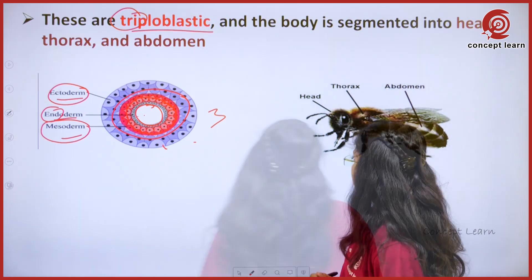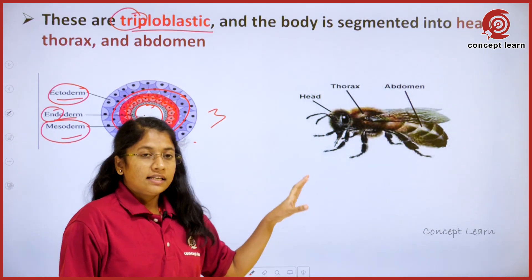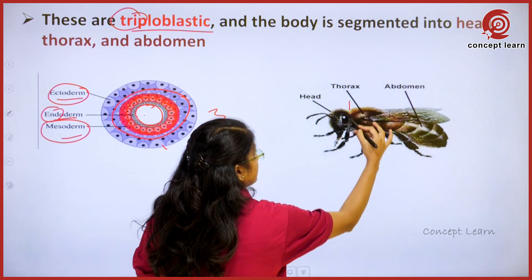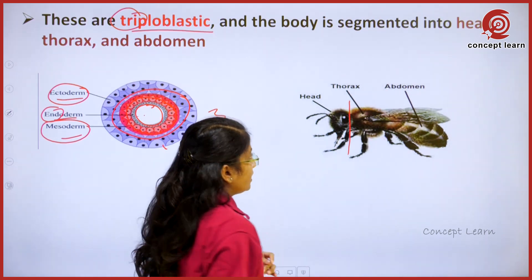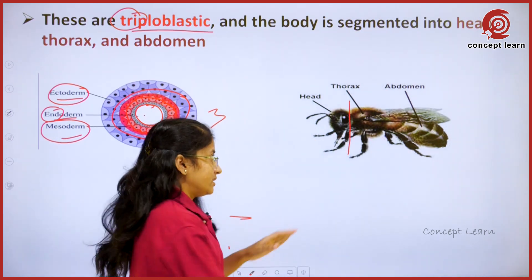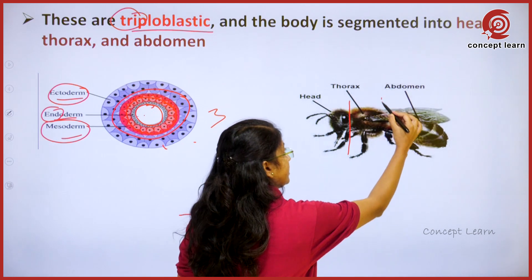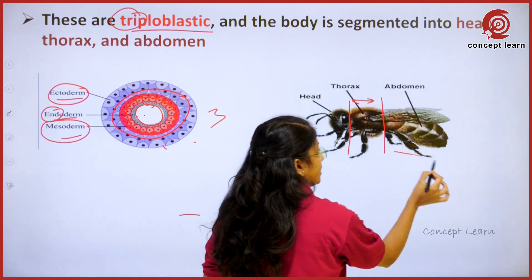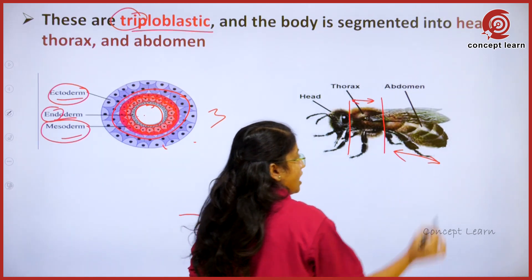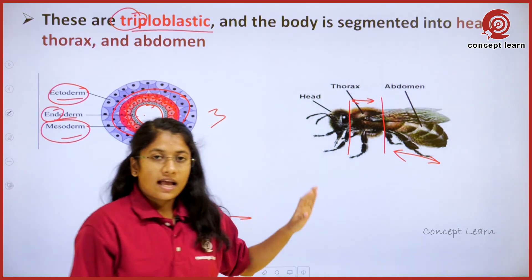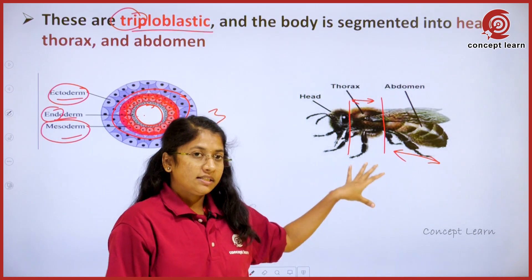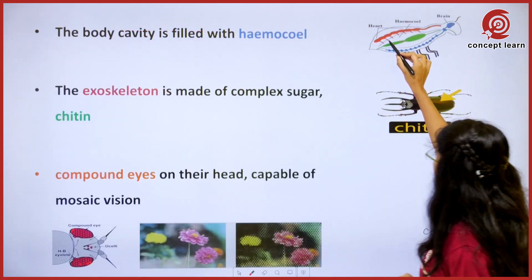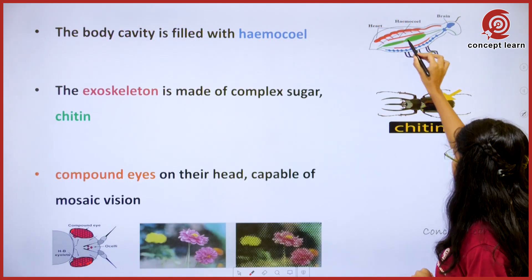These insects are also segmented. A segment divides the head part, another divides it as the thorax, and the remaining body parts form the abdomen. This segmentation is especially specific to insects.